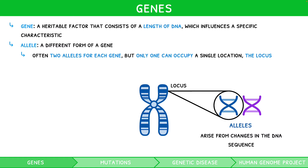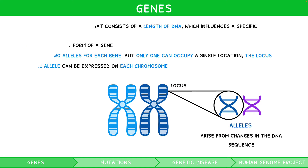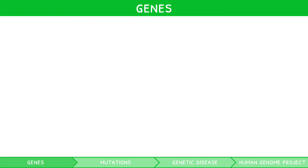However, most organisms have two pairs of each chromosome, and so one allele can be expressed on each chromosome. When exploring genes and organisms throughout this Topic 3 video series, several key terms will arise that you must confidently use. Let's explore them now.